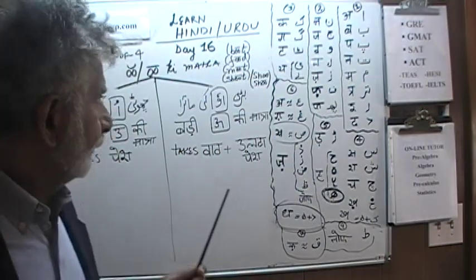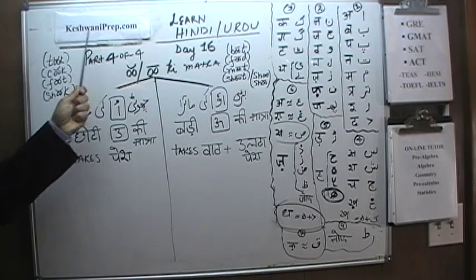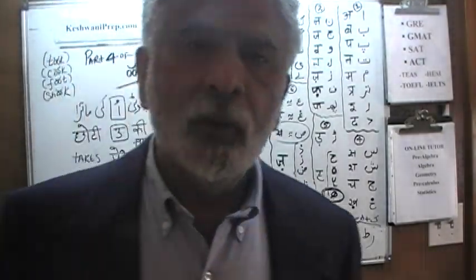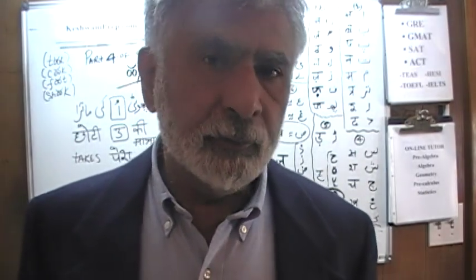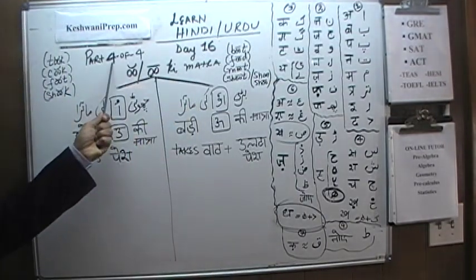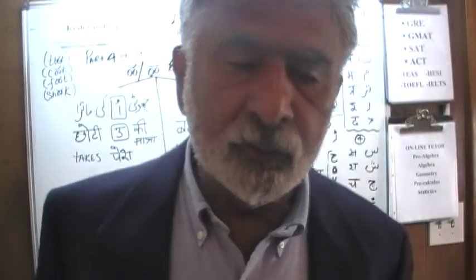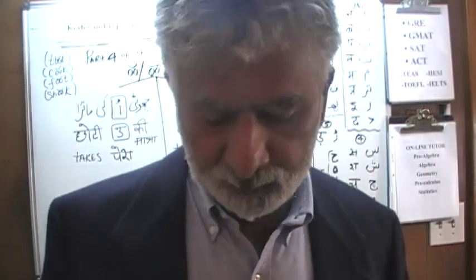Hello, my name is Keshwani. We are here because we want to learn how to read and write Hindi and Urdu — both at the same time. Today is our lesson number 16. Today we'll do the last part, part 4 of 4, of Uki Matra. Days 1 through 4 we did Aki Matra, then Iki Matra, then Oki Matra, and on days 13, 14, 15 we started Uki Matra. Today is the last part.